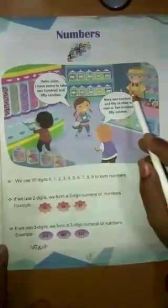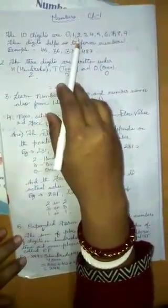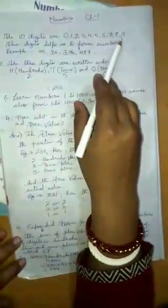The first chapter which I'm going to begin is Numbers. Now, as you know that we have 10 digits from 0 to 9. These 10 digits are 0, 1, 2, 3, 4, 5, 6, 7, 8 and 9.